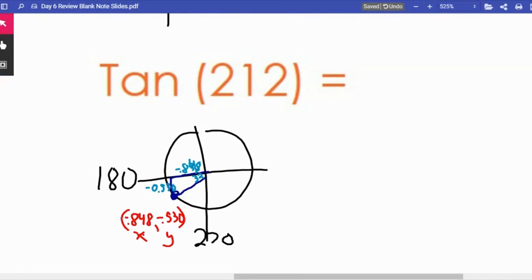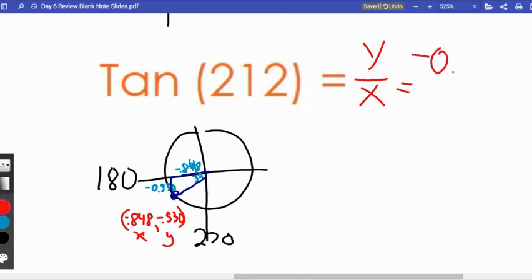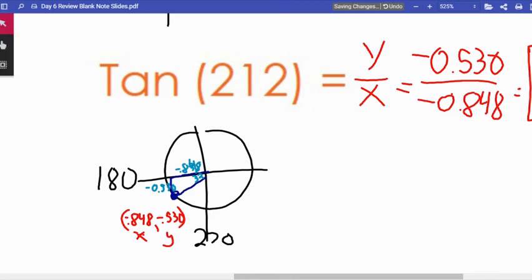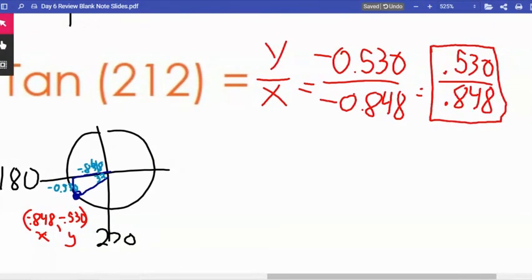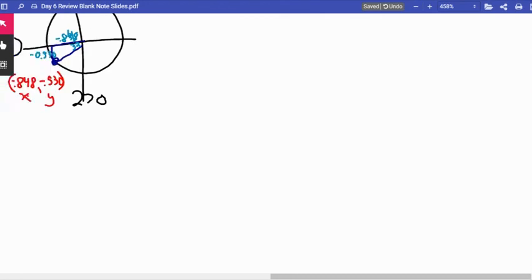That leads us right to the answer. Tangent is y over x. The y value in this case is negative 0.530 and the x value in this case is negative 0.848. I'm going to just clean this up a little bit and say that it's 0.530 over 0.848. A negative divided by a negative is a positive.